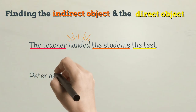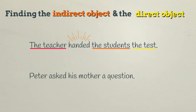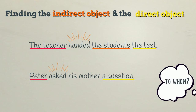Peter asked his mother a question. Here is the subject and the action is asked. To find the direct object, let's ask: Peter asked what? A question. The direct object is a question. Where is the direct object, the question, going? To whom? To his mother. The indirect object is his mother.